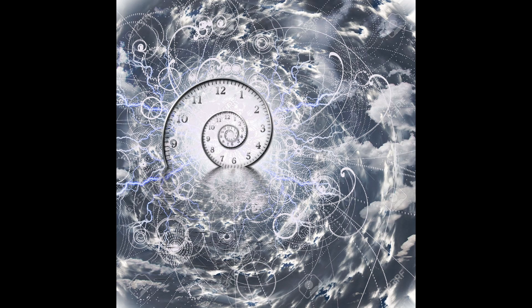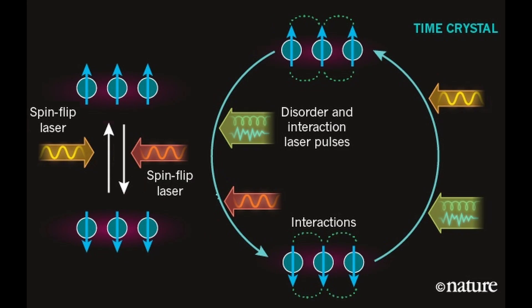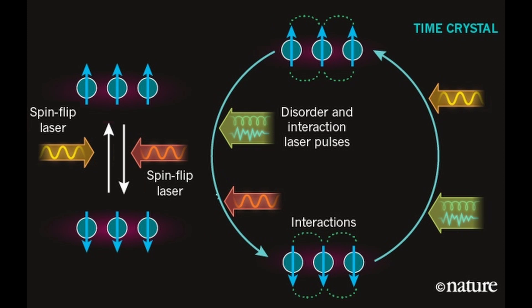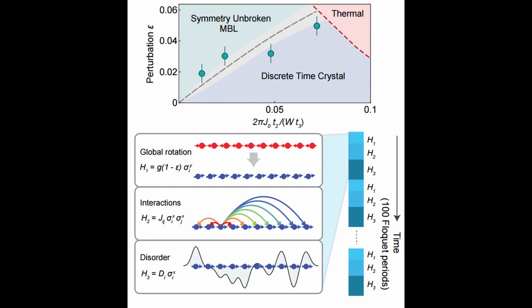However, Wilczek's idea was soon shown to be impossible in a system that is in equilibrium, meaning that it has reached a stable state where its properties do not change over time. Such a system would violate the second law of thermodynamics, which states that entropy, or disorder, always increases in an isolated system.